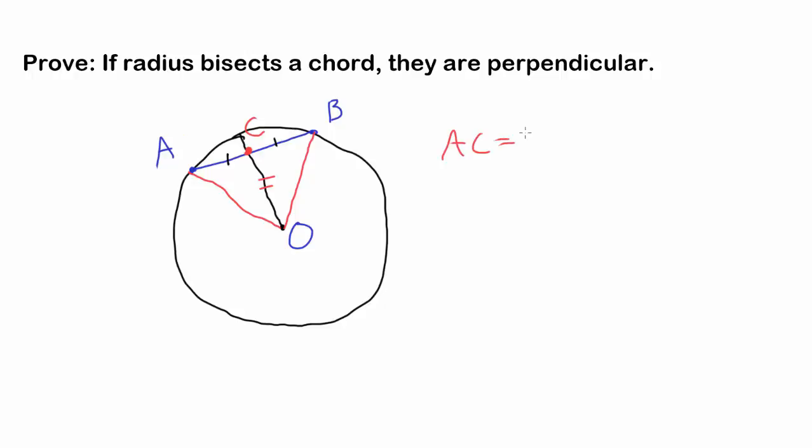We know AC equals BC - that's given to us. We know OC equals OC, this segment is obviously equal to itself. And since it is a circle, all the radiuses are the same, so OA equals OB.